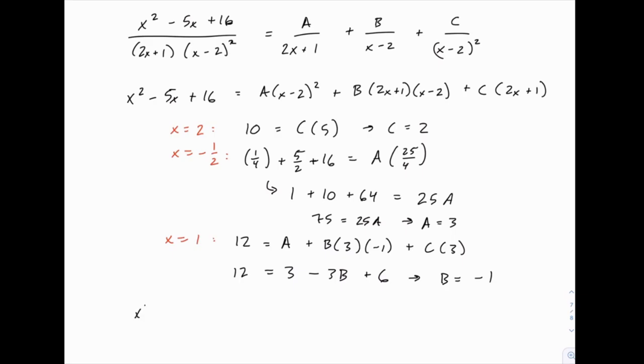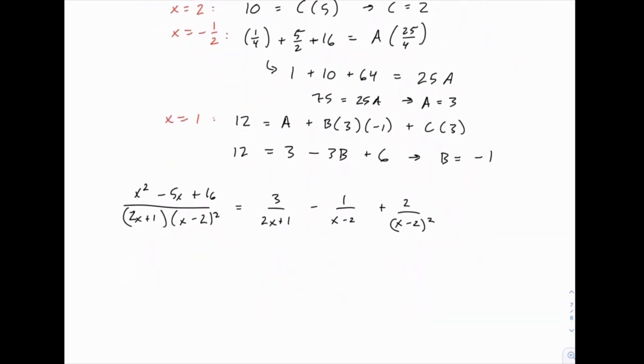Which means that x squared minus 5x plus 16 over 2x plus 1 times x minus 2 squared is equal to 3 over 2x plus 1 minus 1 over x minus 2 plus 2 over x minus 2 squared. Which means if we want to integrate this left side, we can integrate these partial fractions and find our answer the same way.